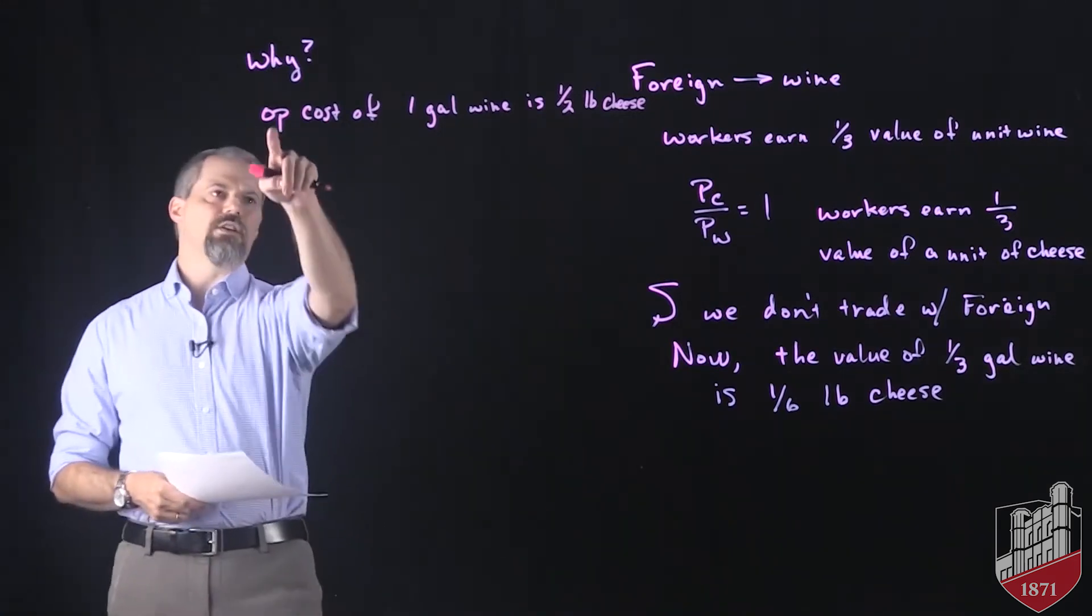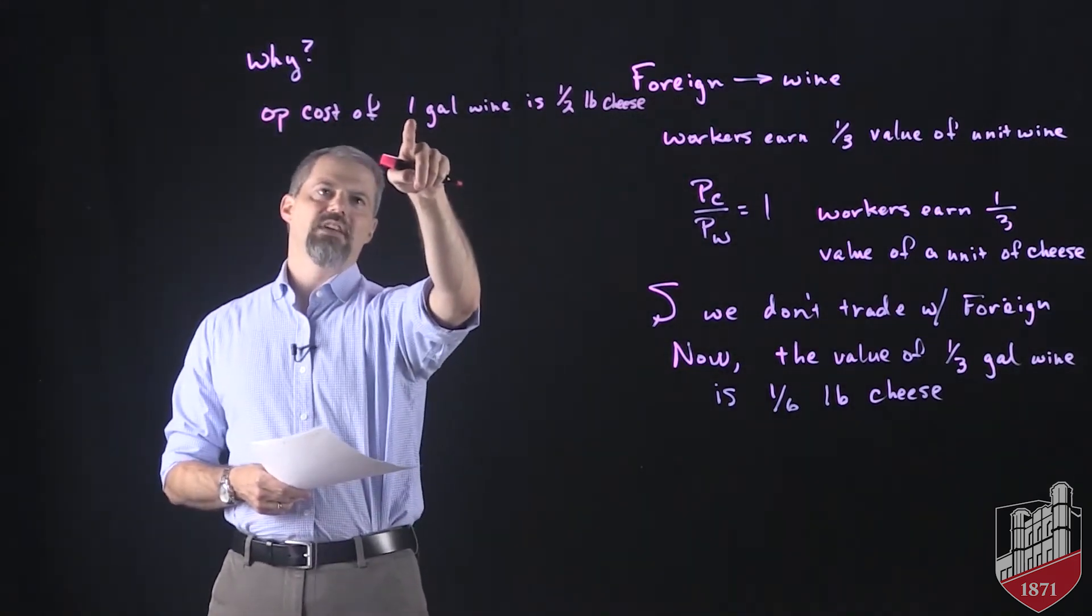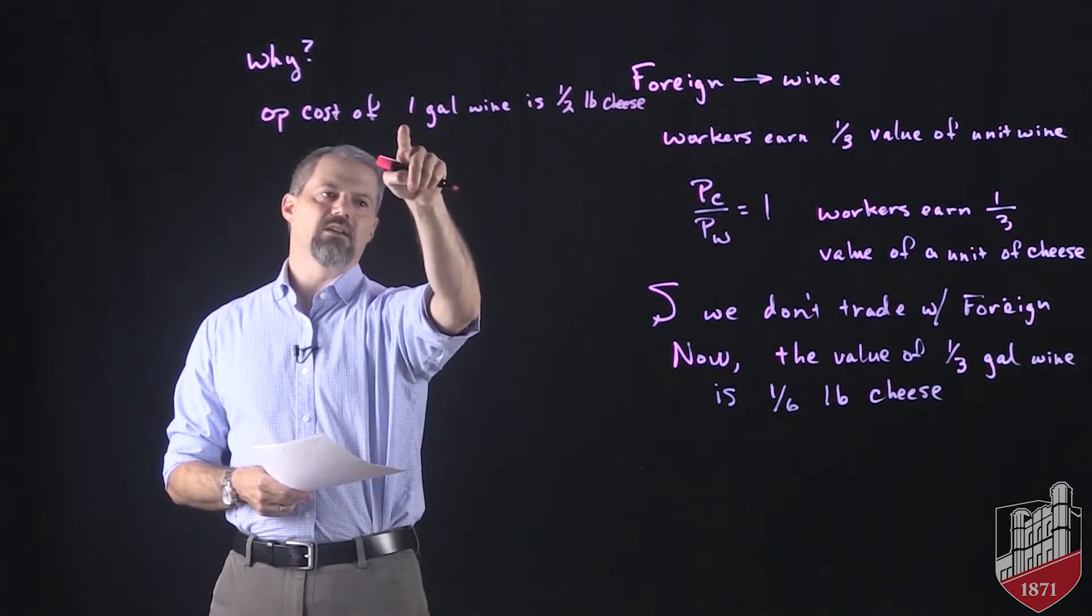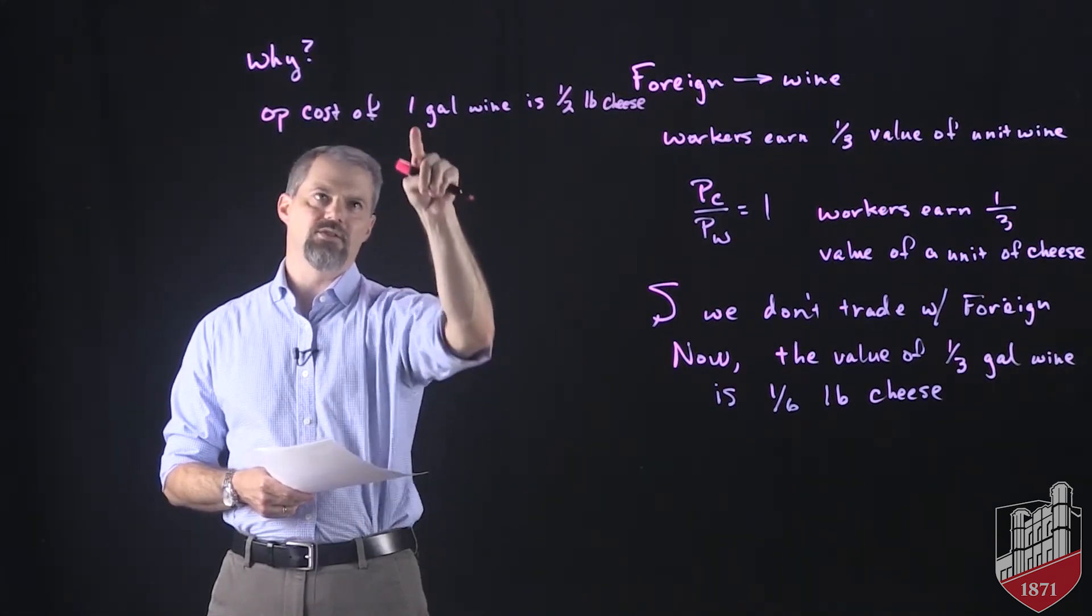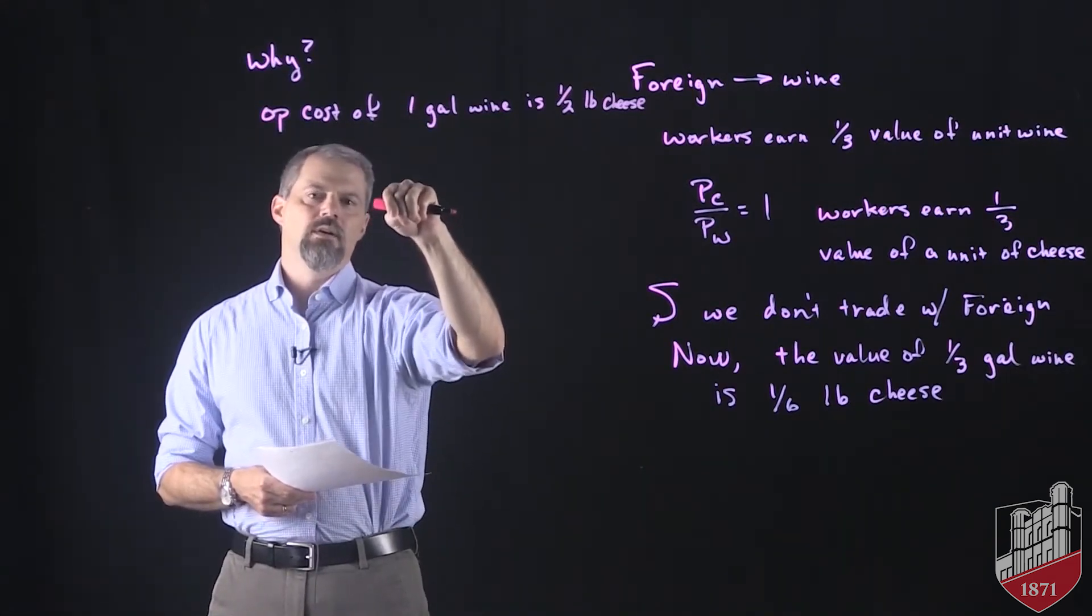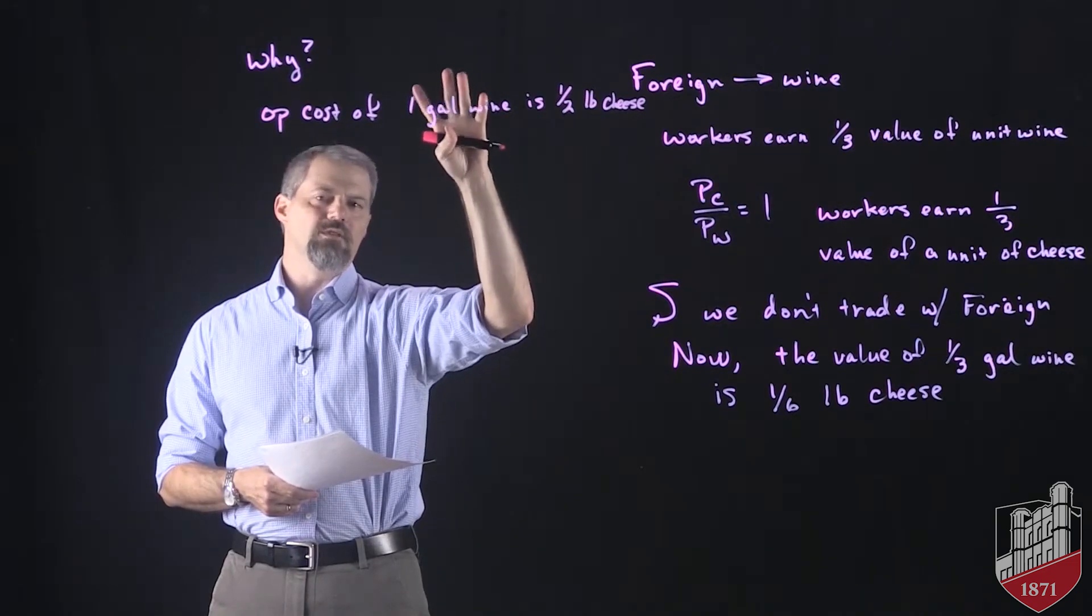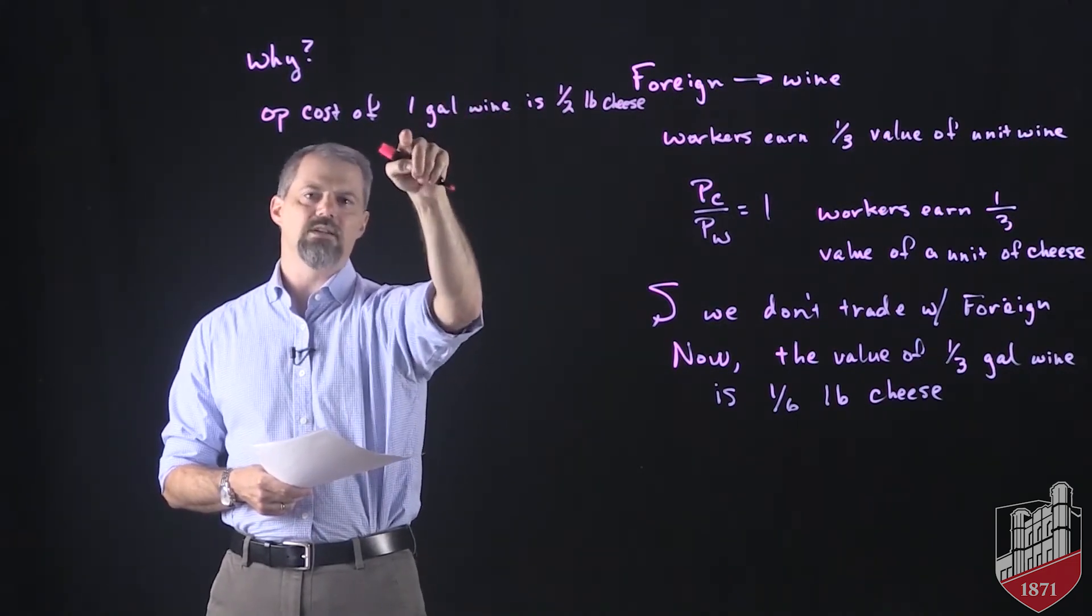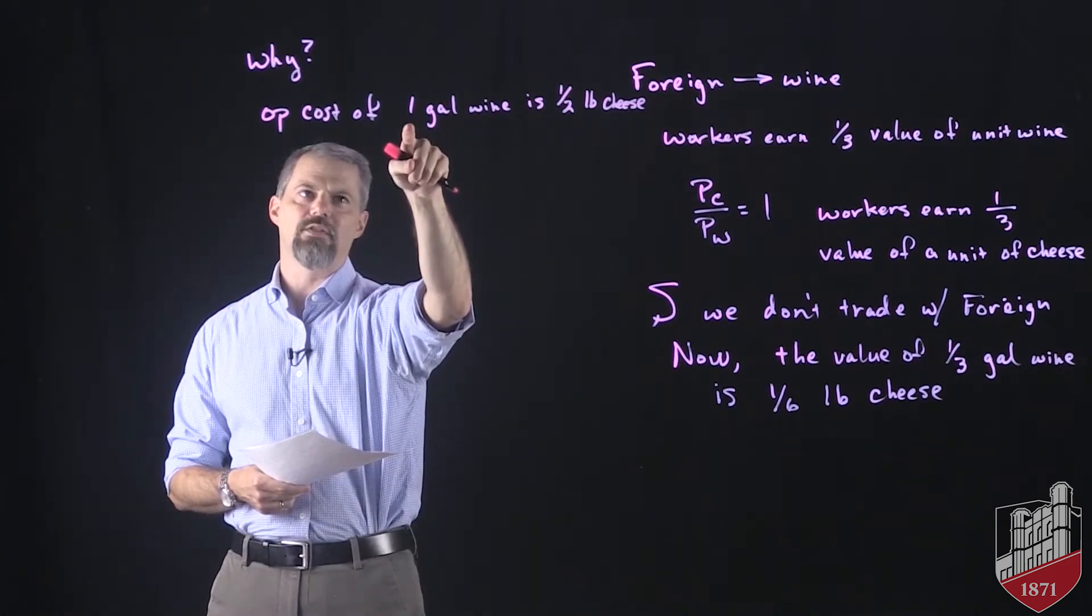So if I want to convert this and figure out the opportunity cost of a third gallon of wine, I need to divide that one by three to turn it into a one-third. But remember that golden rule of algebra. Whatever you do to one thing, you've got to do to everything else. So if I want to convert that to one-third, I've got to divide it by three.